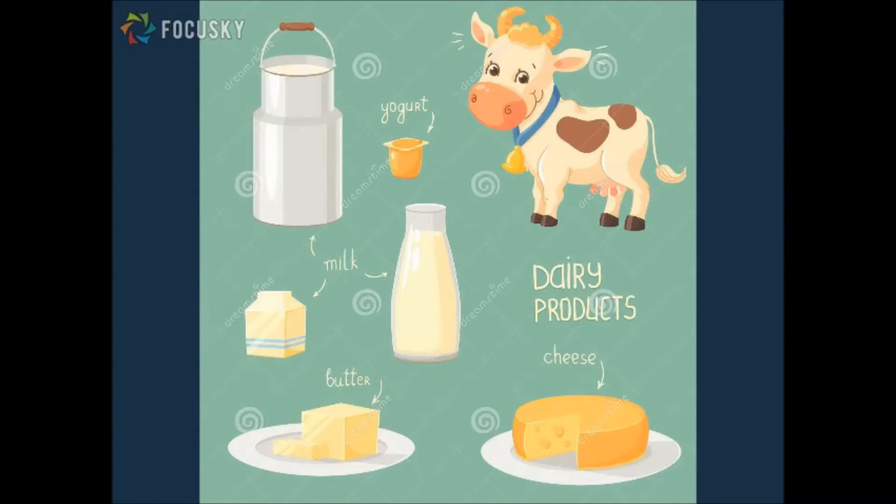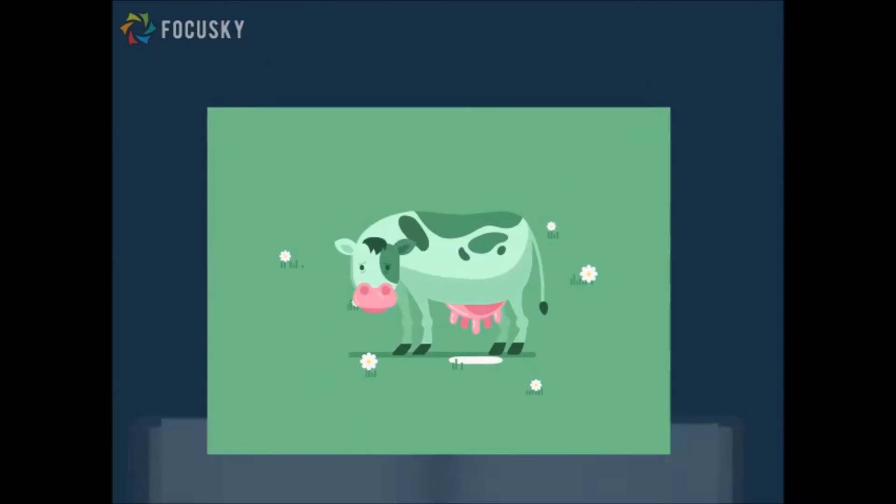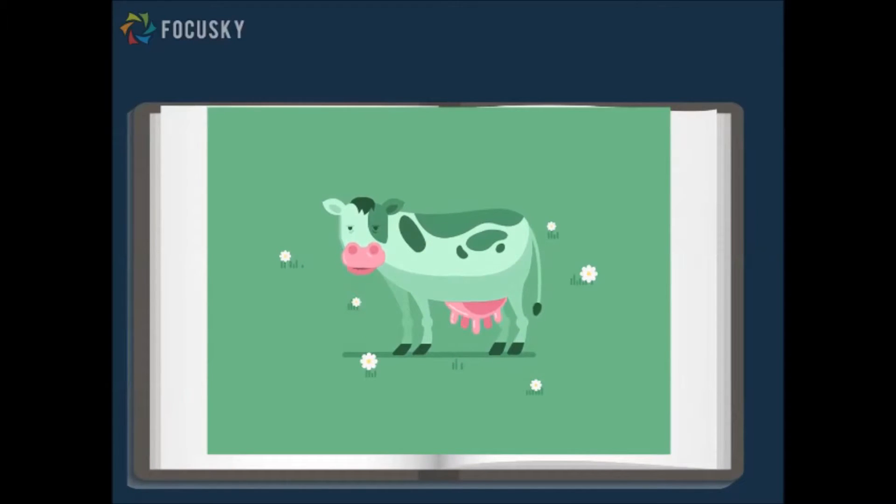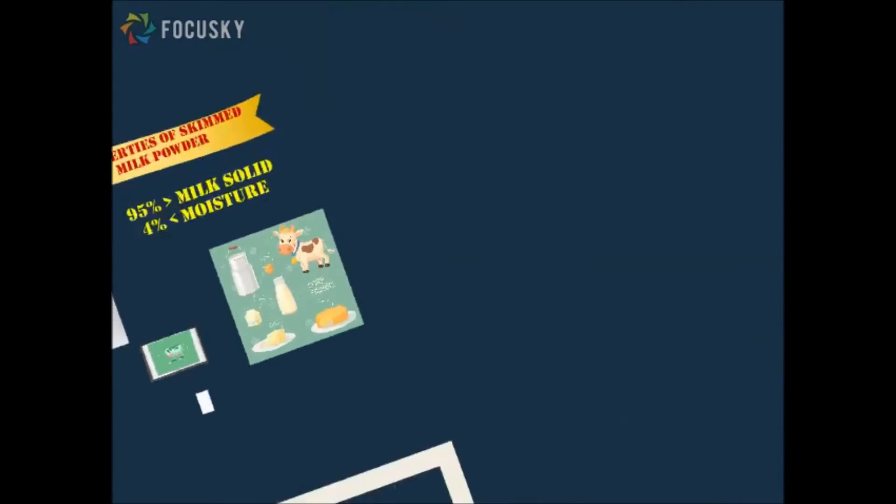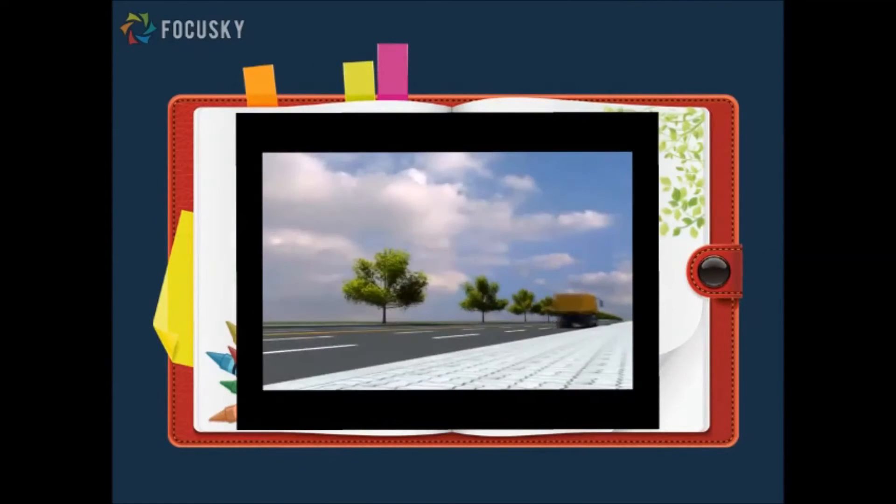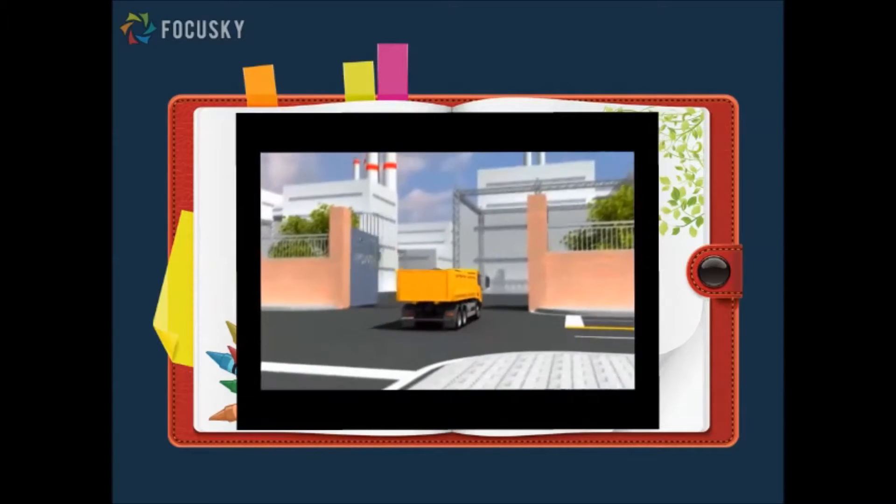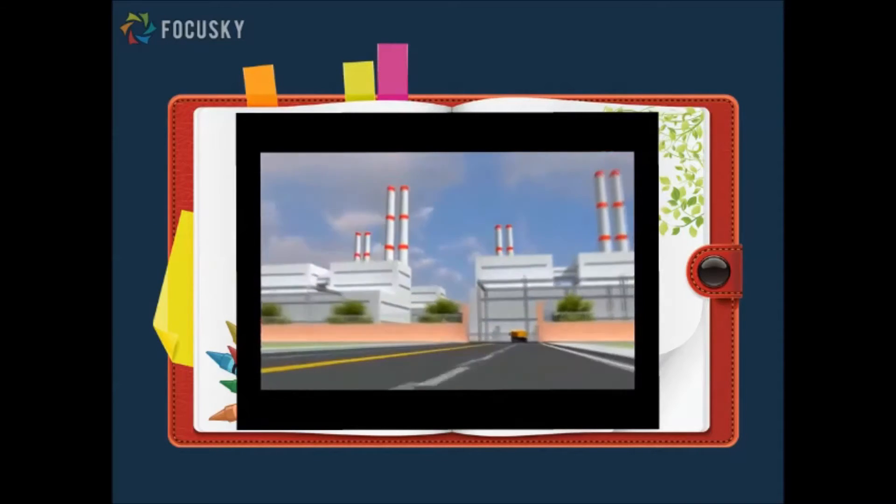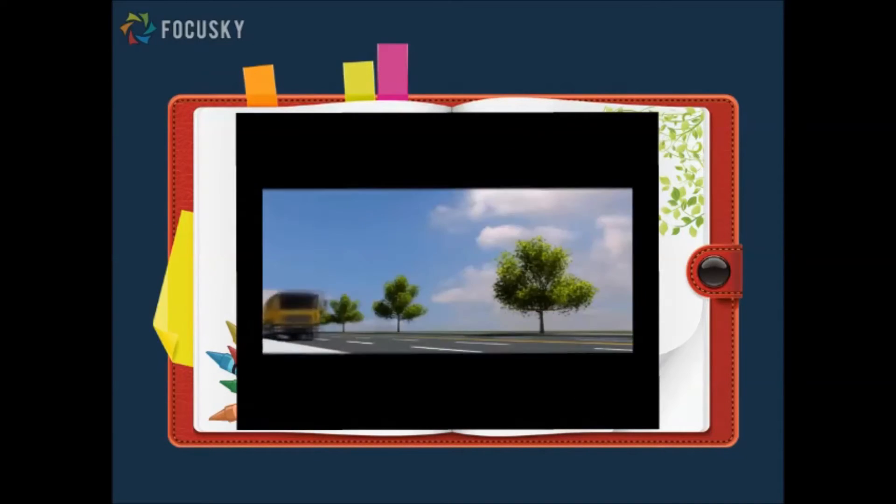But first, how do we get the skimmed milk? We get the skimmed milk from cows. Fresh milk from cows are then transported to the processing plant in order to obtain the skimmed milk powder.